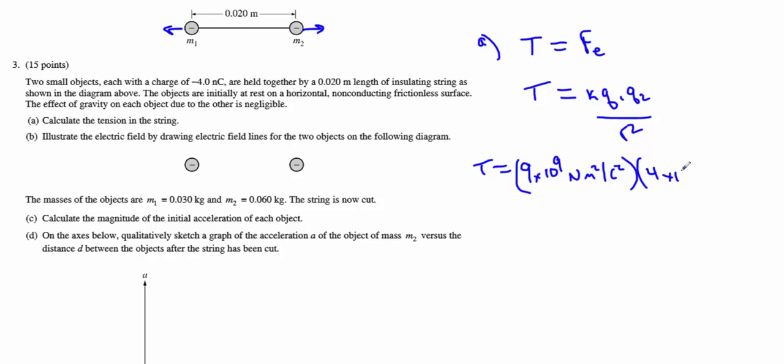We already can determine the direction based on whatever charge we're looking at, which is where the string has to pull on it. 4 times 10 to the negative 9 Coulombs, and there's two of them. So we can just go ahead and square this term. The distance between them is 0.02 meters. And we do need to square that value. You toss that in your calculator, you get 3.6 times 10 to the negative 4 Newtons.